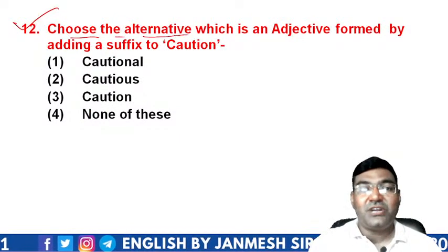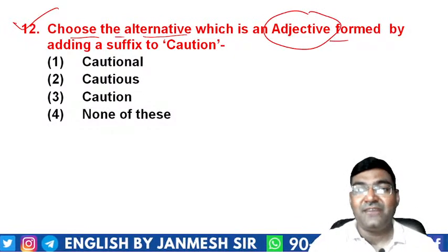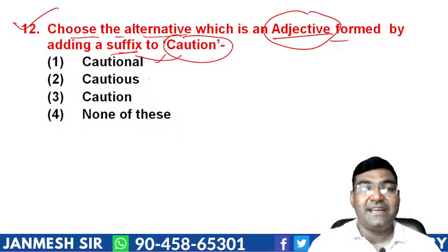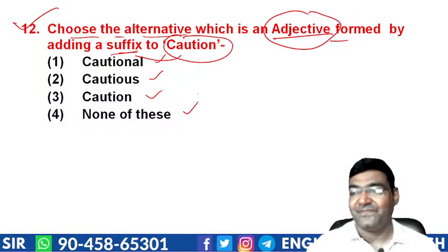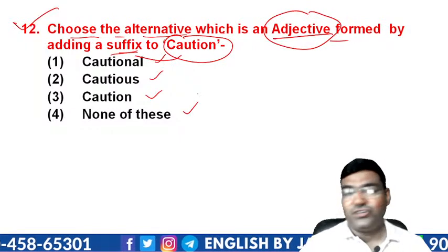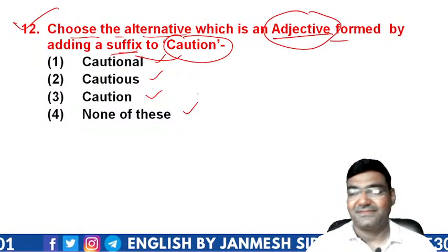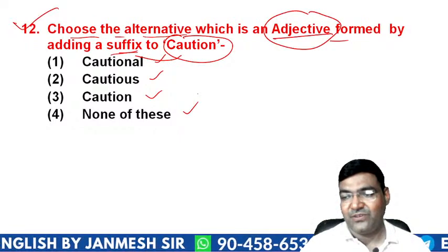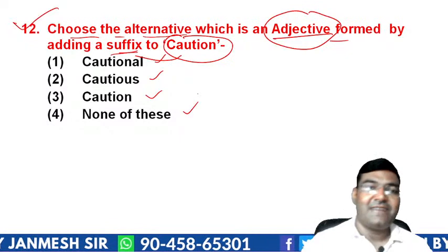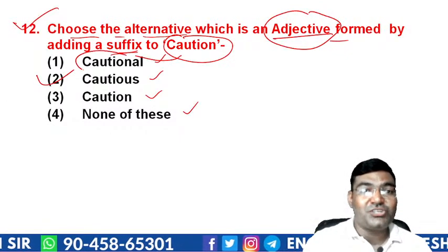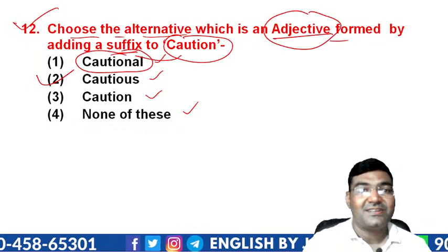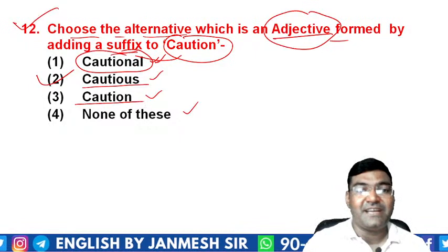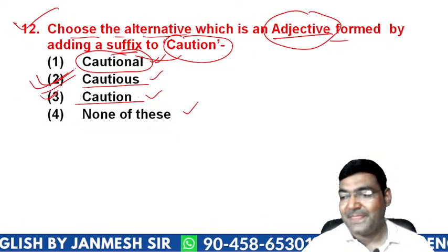Question 12: adding a suffix to 'caution' to form an adjective. The options are 'cautional', 'cautious', 'caution', or 'none of these'. 'Caution' itself is a noun. 'Cautional' is not a valid word. 'Cautious' is formed by adding the suffix '-ous' to 'caution', and it is an adjective. So the answer is option 2 — 'cautious'.